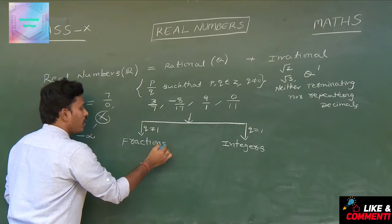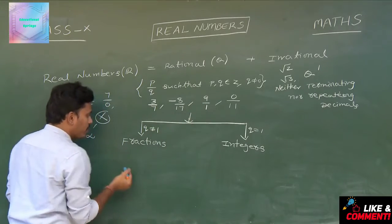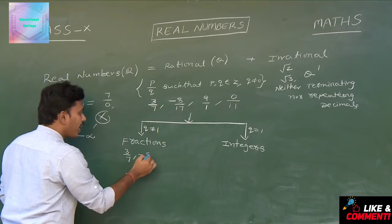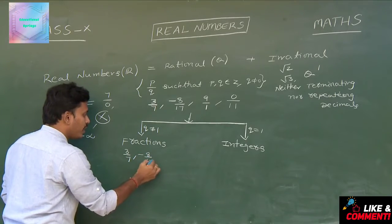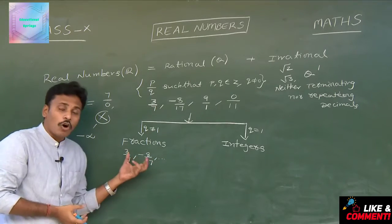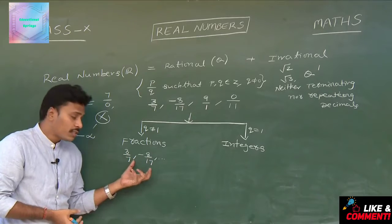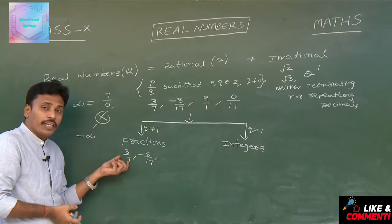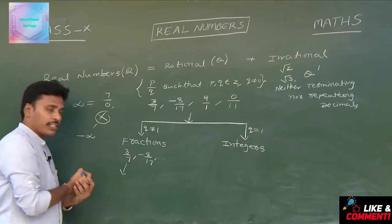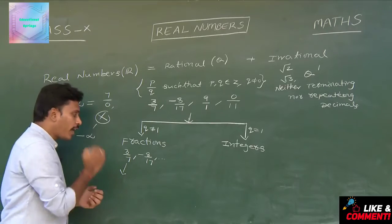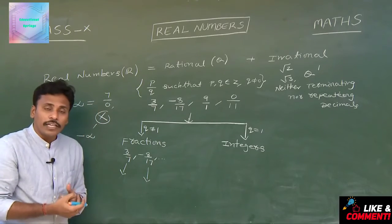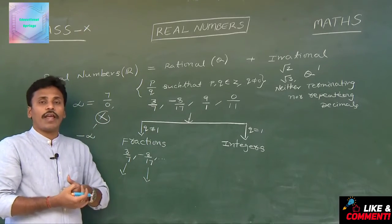In the earlier examples, 3 by 7 and minus 8 by 17 are fractions. Among these fractions, 3 by 7 is a positive fraction and minus 8 by 17 is a negative fraction.